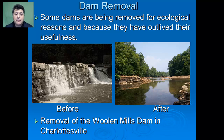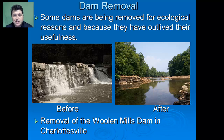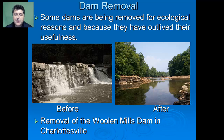Many believe there are too many dams and that some need to be removed for ecological reasons or because they've outlived their usefulness. One such dam removed recently here in Albemarle was the Woolen Mills Dam, which allowed for an opening up of the river system and a restoration of that ecology.